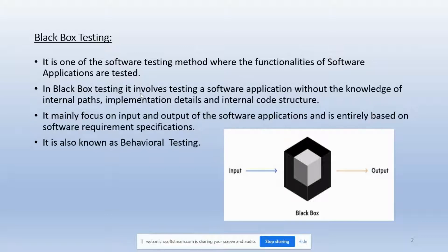There are two types of testing methods: white box and black box. We are mainly focused on black box testing. It is a software testing method used to test the functionalities of a software application without having knowledge of internal paths, application details, and internal code structure. It is mainly focused on input and output of the software application and is entirely based on software requirement specifications. Black box testing is also known as behavioral testing.